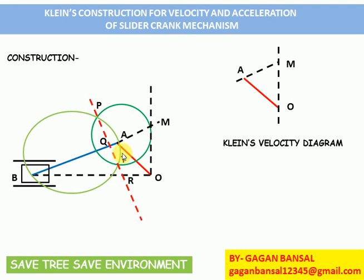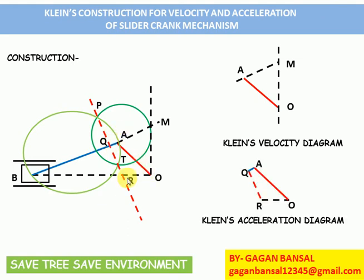Join O, A, Q, R — this quadrilateral OAQR is the acceleration diagram obtained using Klein's construction, equivalent to what we obtained using the graphical approach in the previous session.